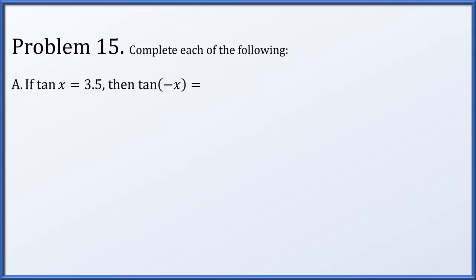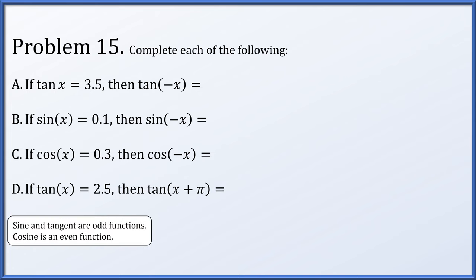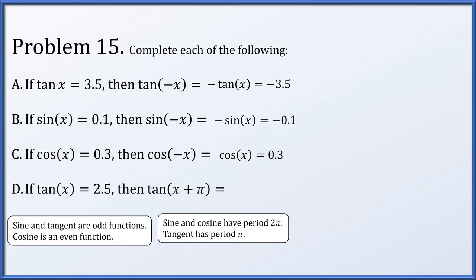For problem 15, let's complete each of the following. If tangent x is 3.5, then what's the tangent of −x? If sine x is 0.1, what's the sine of −x? If cosine x is 0.3, then what's the cosine of −x? And if tangent x is 2.5, what's the tangent of x + π? The thing to remember is that sine and tangent are both odd functions, whereas cosine is an even function. So the tangent of −x is −tan(x). We know tan(x) is 3.5, so this results in −3.5. Sine is also odd, so we get −0.1. Cosine is even, so simply ignore the minus inside and get 0.3. And since tangent has a period of π, the tangent of x + π is the same as the tangent of x, which we were given to be 2.5.